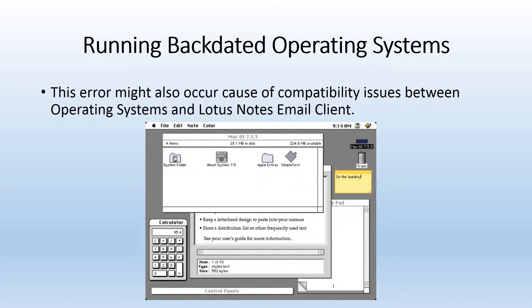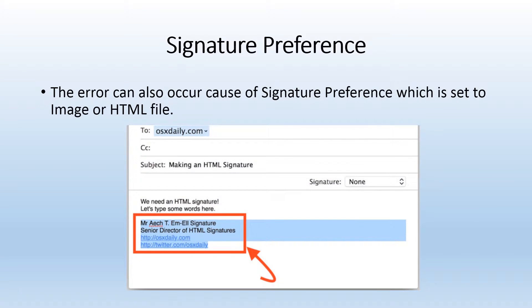Another reason is running an outdated operating system. This leads to a compatibility issue between the email client and the OS, so this might be one of the reasons for the error. The fourth reason is signature preferences — the added HTML and image signature can also lead to the occurrence of this error.